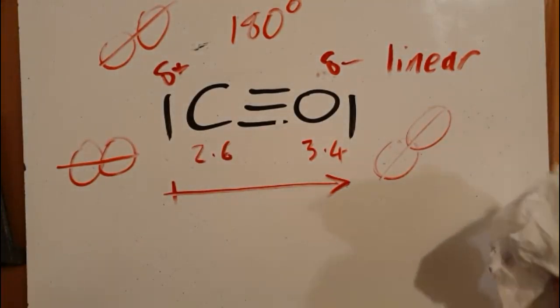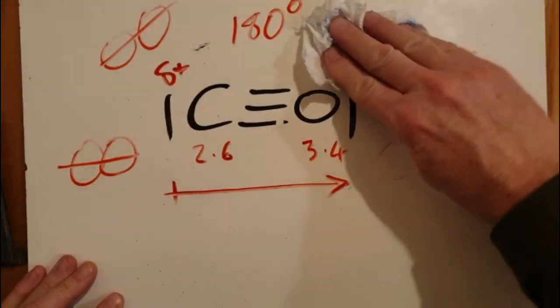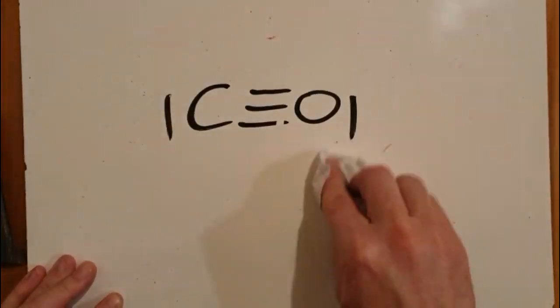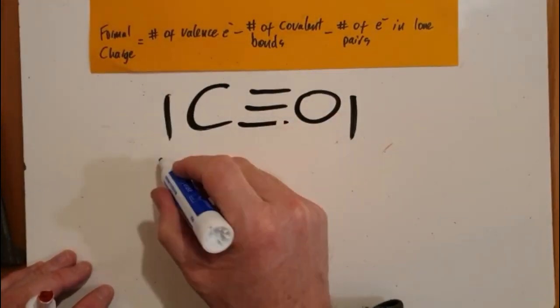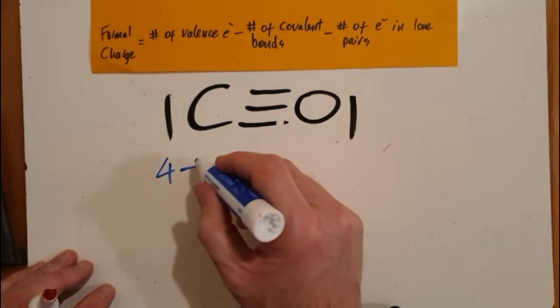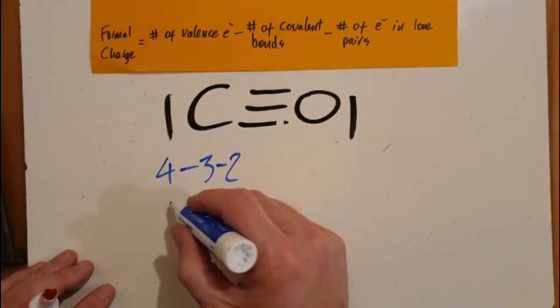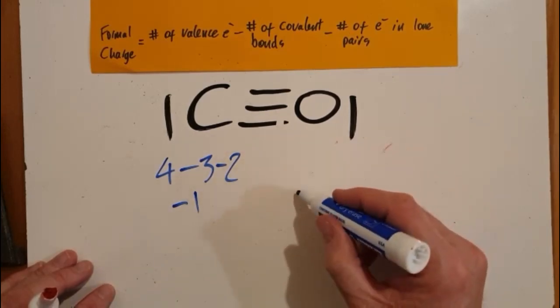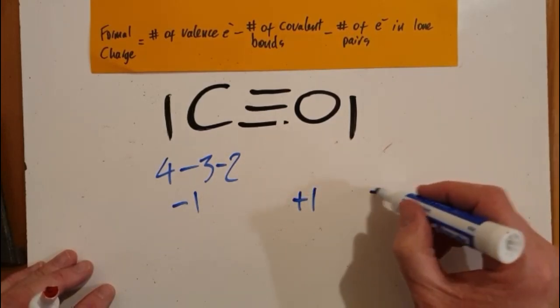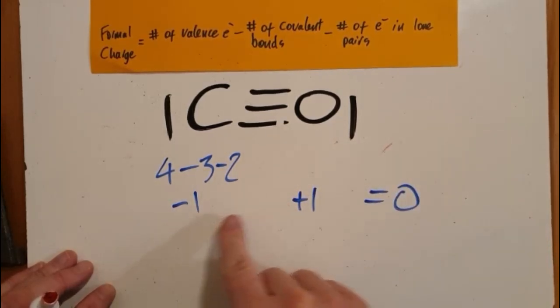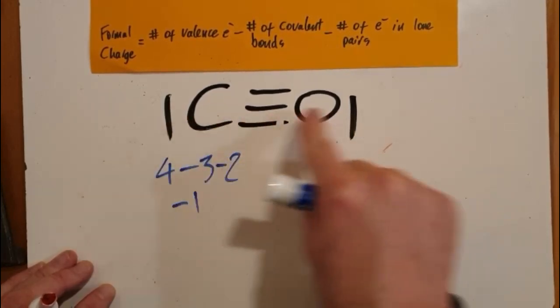Just for completeness, a formal charge. So for carbon, I've got four valence electrons minus three bonds minus two electrons in alone pairs gives me a formal charge of minus one. So oxygen must be plus one because the sum of the formal charges equals the charge on the molecule, which is zero.